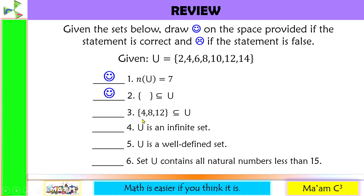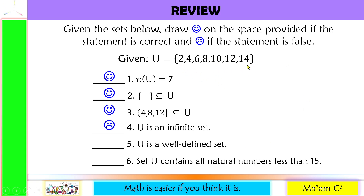Number 3: elements 4, 8, 12 is a subset of the universal set. Do we have 4, 8, and 12 here? Yes, we do. Therefore, this is a happy face. Number 4: the universal set is an infinite set. We have counted the elements in the universal set, so therefore this is not an infinite set but a finite set. Number 4 is a sad face. Number 5: the universal set is a well-defined set. These are even numbers from 2 to 14, so this is a well-defined set. Happy face.